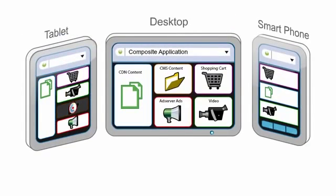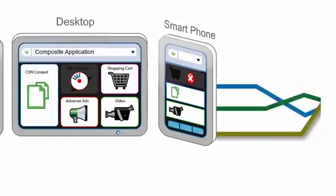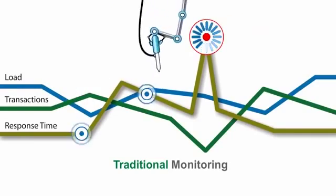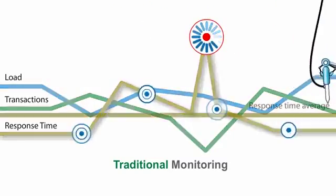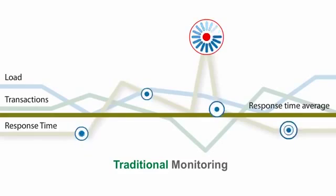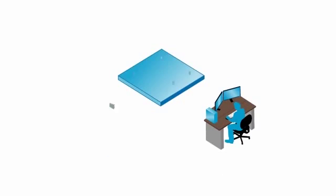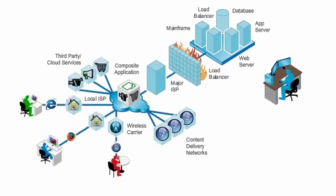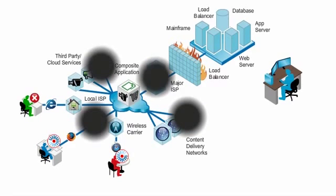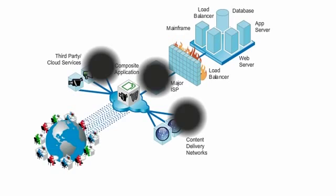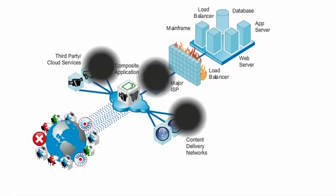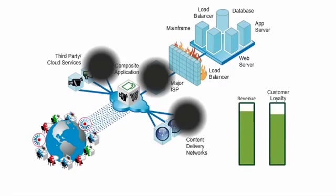End users have no trouble seeing the performance problems that traditional monitoring misses when performance is sampled or the problem is an outlier hidden in average performance. Monitoring focused on infrastructure has blind spots all along the chain that delivers modern distributed applications. With thousands or millions of transactions per hour, even transient performance problems cause big losses — revenue, customer loyalty, reputation.